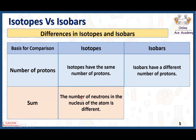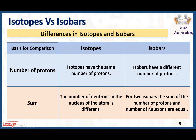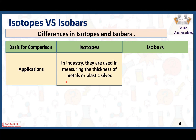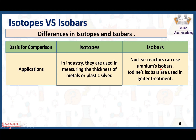Regarding the number of neutrons in the nucleus: for isotopes it is different. For two isobars, the sum of the number of protons and number of neutrons are equal because their mass number is the same. Both isotopes and isobars are very important in chemistry. In industries, isotopes are used to measure the thickness of metals or plastics. Nuclear reactors can use uranium isotopes, and certain isobars are used in goiter treatment. Both have separate importance and applications in different fields of chemistry.